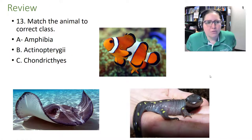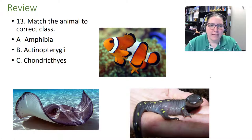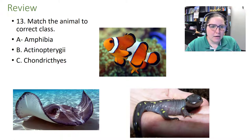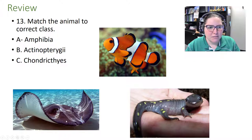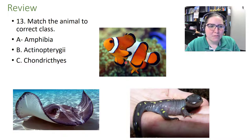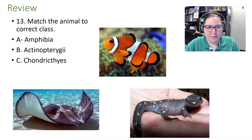Let's match animals to their correct class — all chordates. The bottom left is Chondrichthyes (a cartilaginous fish), the top middle is Actinopterygii (a ray-finned fish), and the bottom right is a cute amphibian.